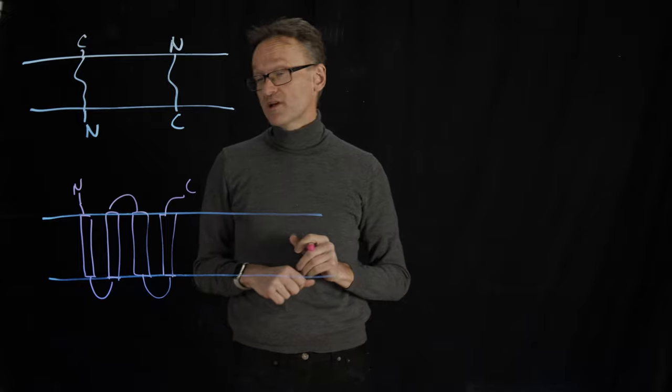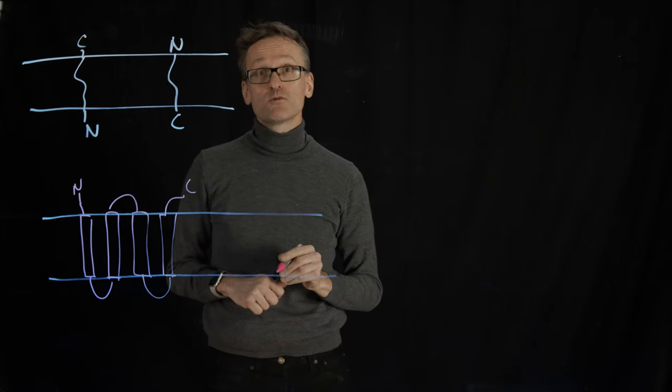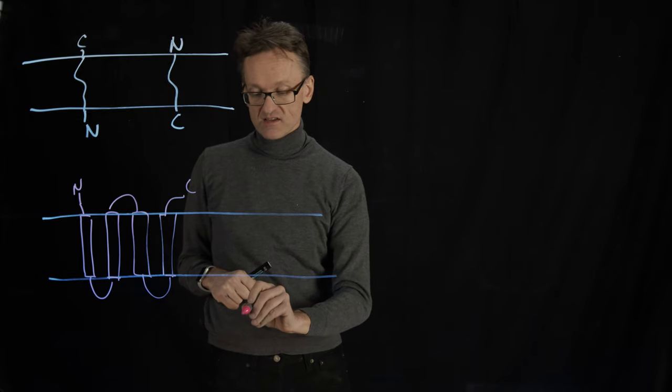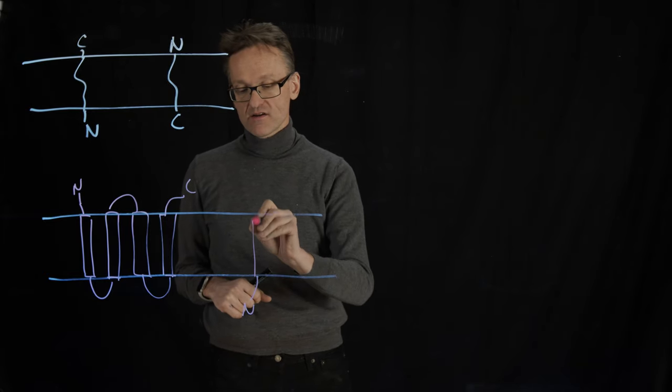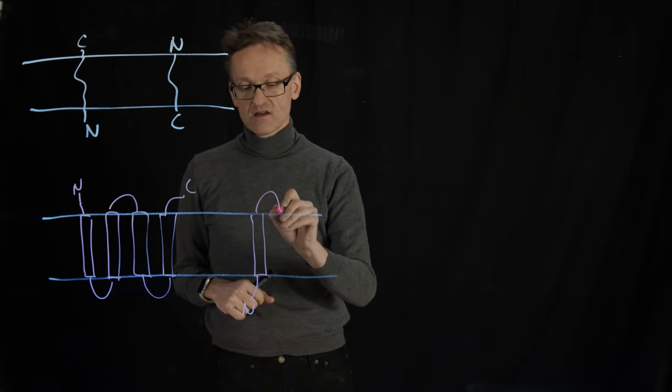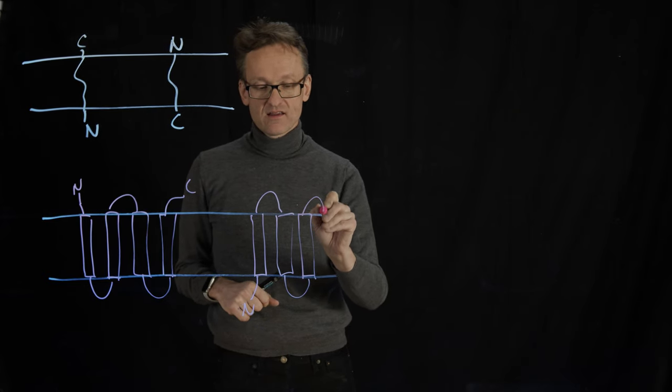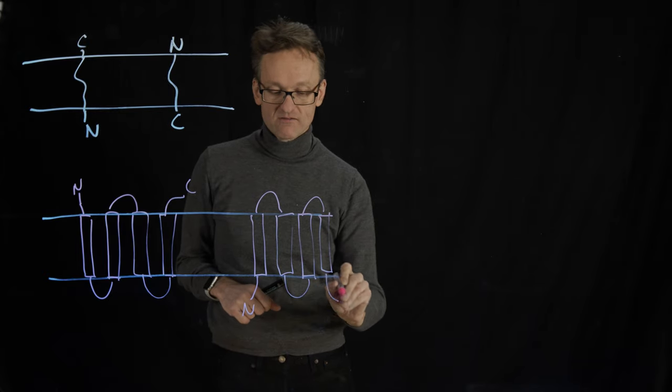Drawing N and C is a great way to indicate where the start and N is. Or maybe that protein should have the N terminus there, and then go in, out, in again, and out one final time.